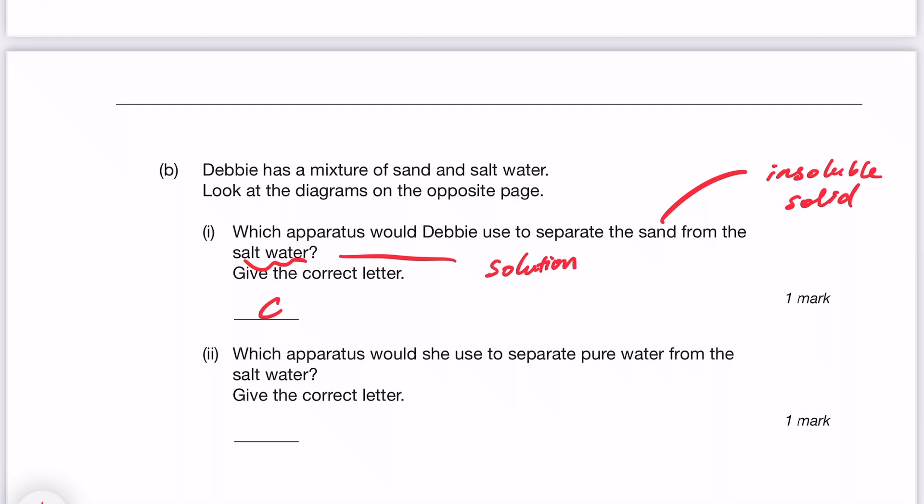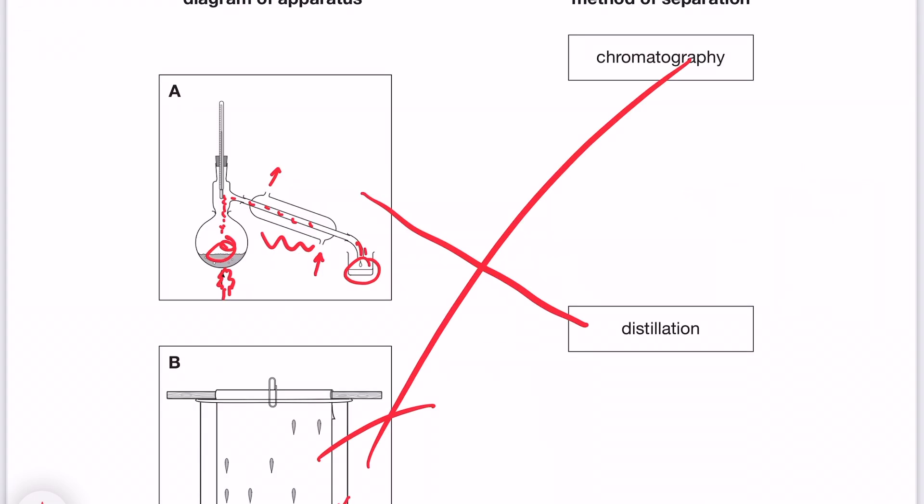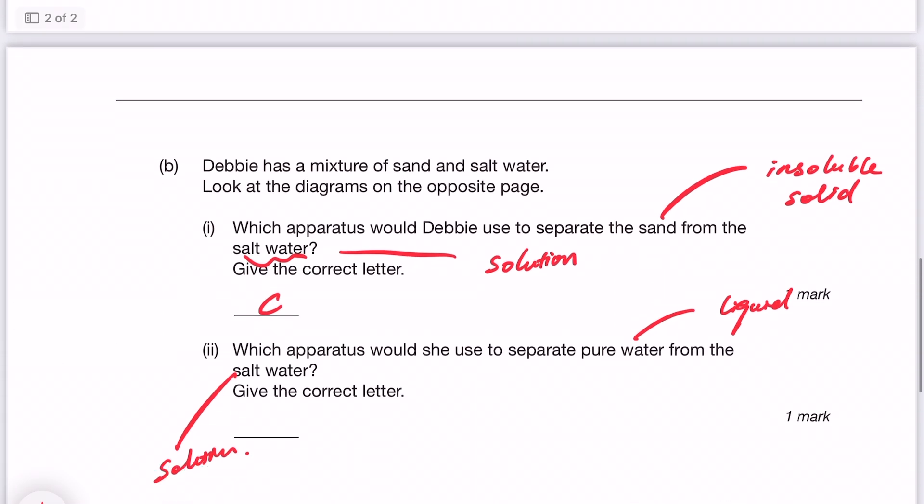And then let's keep going. Which apparatus would she use to separate pure water from the salt water? Well, pure water in this case is the liquid. And salt water is a solution. How do we separate the salt from the water? To be honest, we can use evaporation. But I don't think evaporation was a choice from the previous page. In that case, we can use distillation. If we go back to the distillation, I hope you guys can see that the water will be heated into water vapor, will get into the condenser, and then will be condensed back into the liquid water collected by that little beaker on the right hand side. So in this case, the answer for the question will be A.